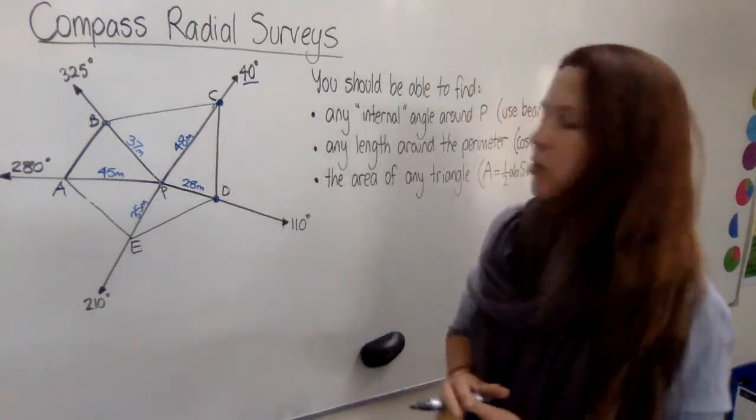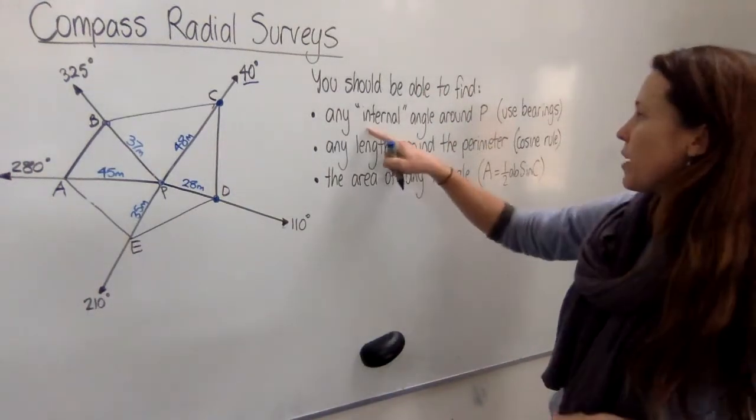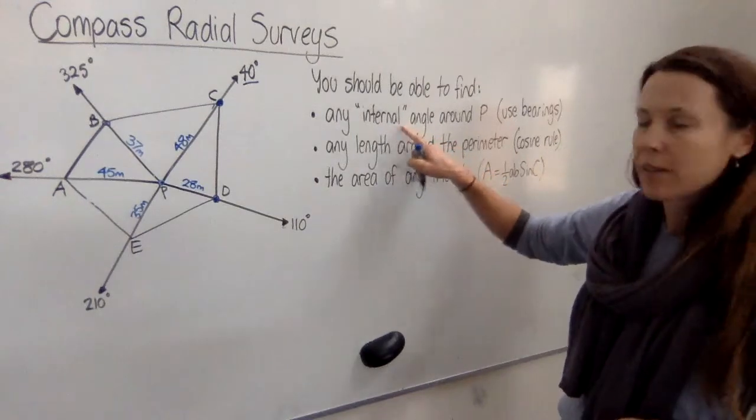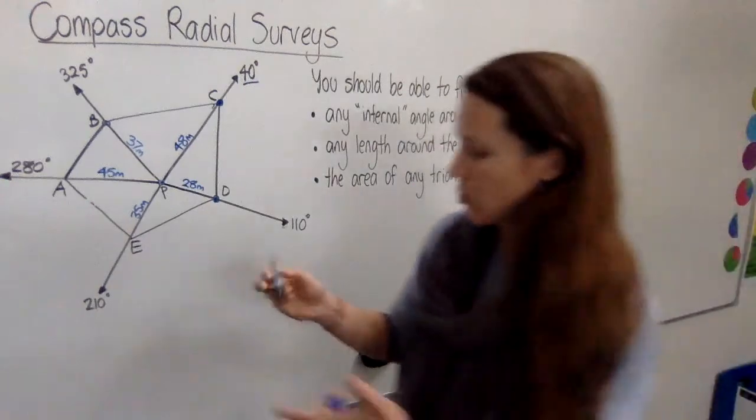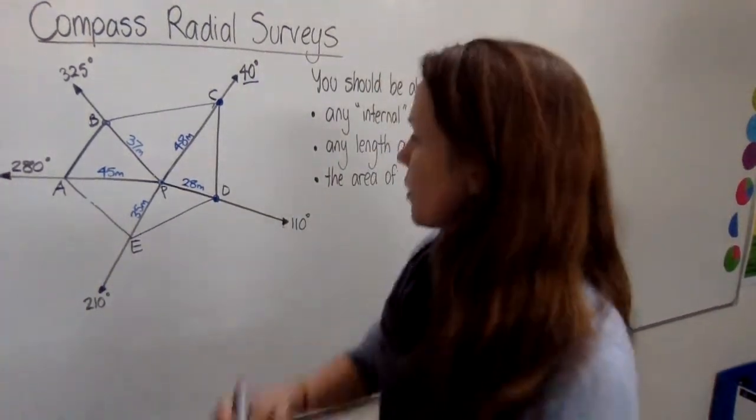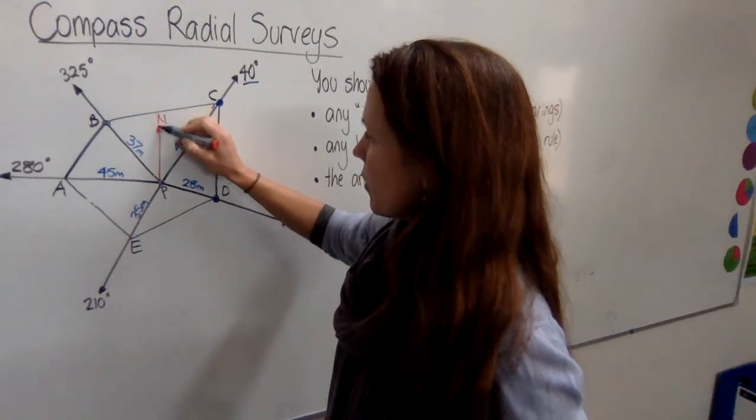Once you've got your compass radial survey, there's all sorts of things that it can help you with. Now you should be able to find any internal angle on one of these charts quite easily just by using the bearings. So how do you do that? Well don't forget to think through where north is. North is just straight up here on our picture.